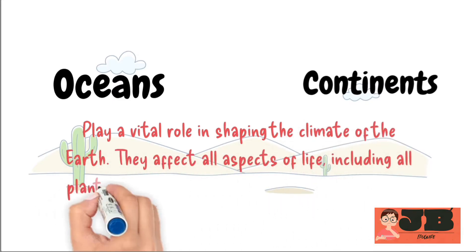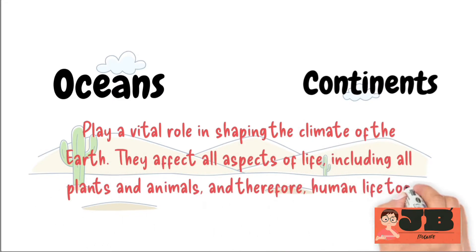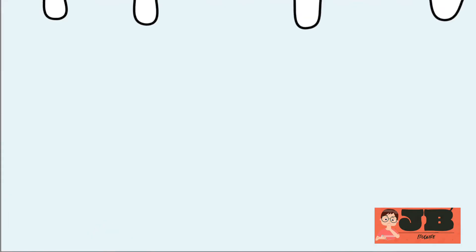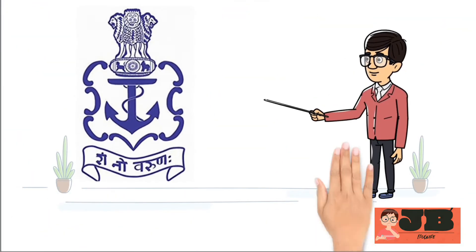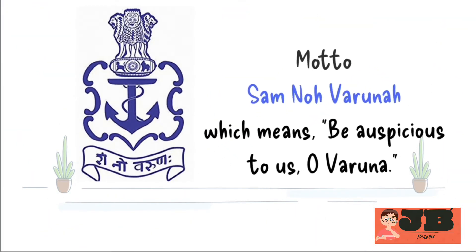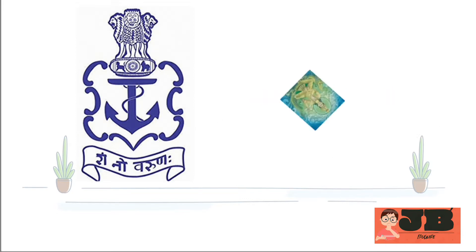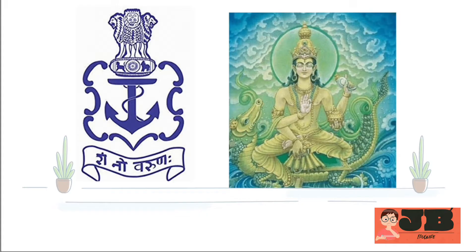They affect all aspects of life, including all plants and animals, and therefore human life too. We see their impact throughout our history and culture, and in our daily lives. You can see the emblem of the Indian Navy contains the motto 'Sam no Varana,' which means 'be auspicious to us, O Varana.' This is an invocation to Varuna, a Vedic deity associated with the oceans, the sky, and water in general.